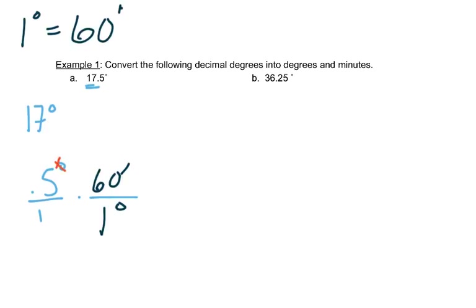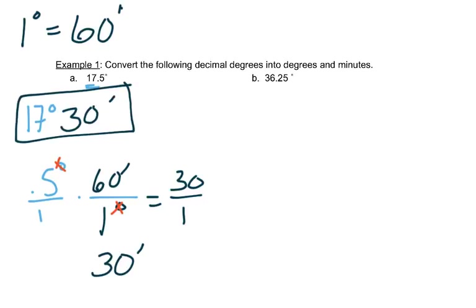This also tells us to multiply straight across, so 0.5 times 60 is 30, 1 times 1 is 1. So we have 30 minutes. So we write that up here. So 17.5 degrees is the same as 17 degrees 30 minutes.